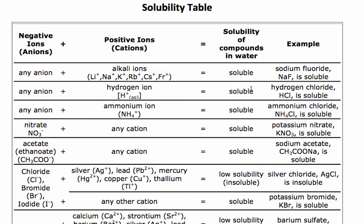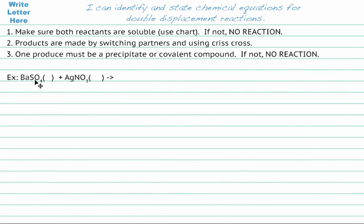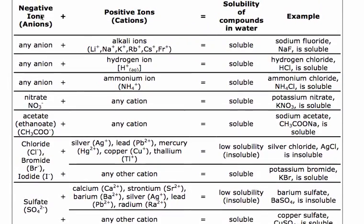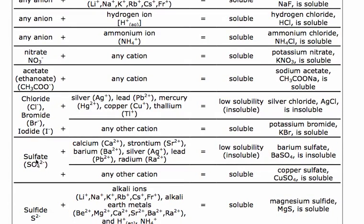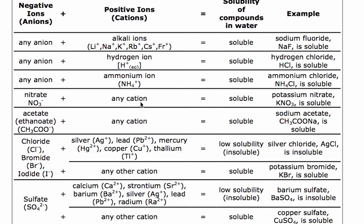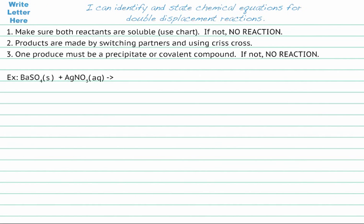How do we tell if something is soluble in water? This is called a solubility table, and it's going to help us determine that. We take a look at what the anion is. For example, if we're trying to see if barium sulfate is soluble: sulfate is our negative anion, so we look in the anion column until we find sulfate. Sulfate plus any of these listed cations will be insoluble — a precipitate — and barium is in that list, so barium sulfate will be a solid. For silver nitrate, nitrate plus anything is soluble, so that will be aqueous.